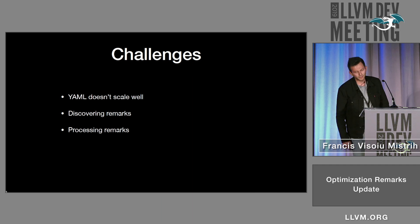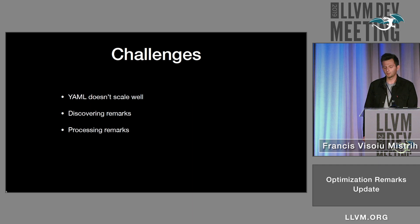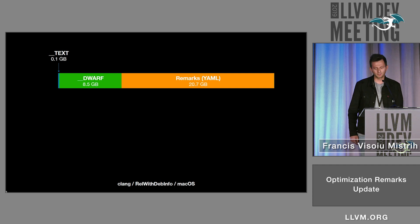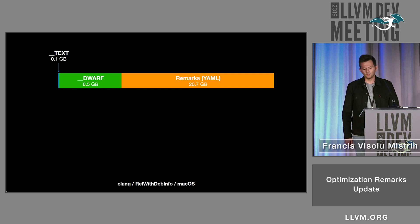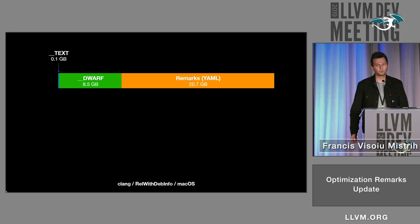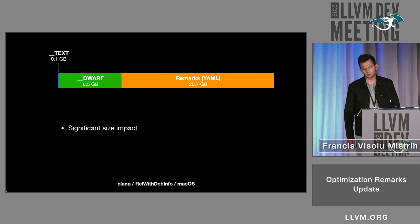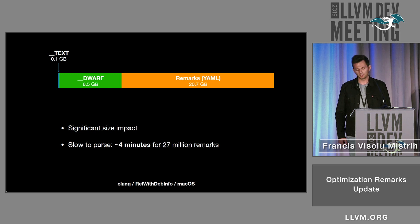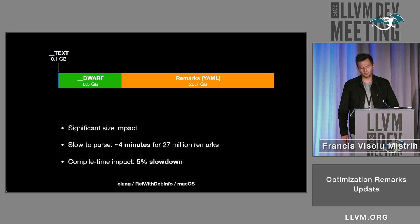For example, for Clang built with release and debug info on Mac OS, we have around 20 gigabytes of remarks for just 100 megabytes of binary. And that is huge, and it's actually barely usable — it takes four minutes to parse all these 27 million remarks. Other than that, it actually has a compile time impact, which is around a 5% slowdown.